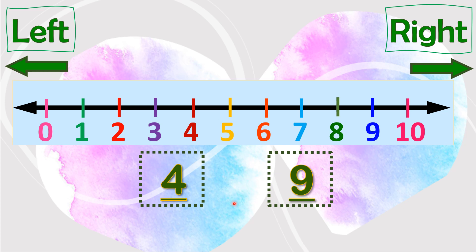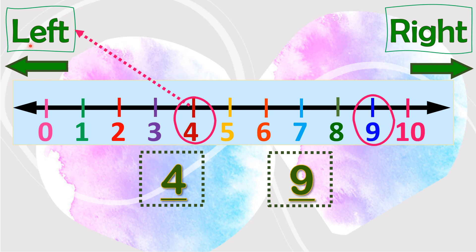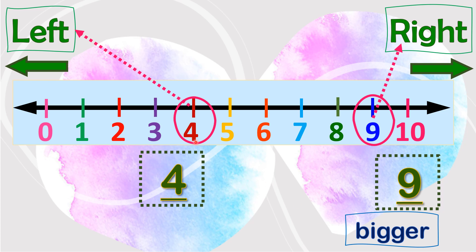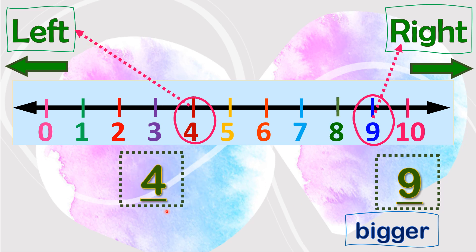Let's take 4 and 9 as an example. We circle 4 and 9. 4 is at the left side, and 9 is at the right side. We say that numbers at the right side are bigger. Since 9 is at the right side, 9 is bigger. 4 is at the left side, so 4 is smaller.